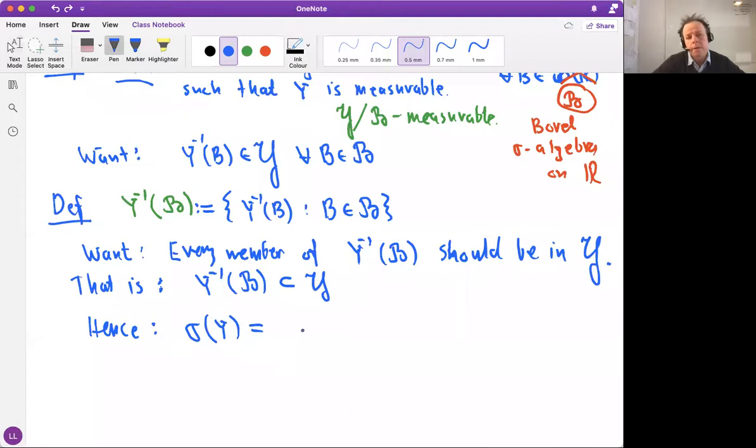We can define, using a different notation, that this is the sigma algebra collected by, generated by a collection of sets, with this set collection being the pre-imaging, the pre-images of Borel sets. Okay. And this is a familiar thing for us already.